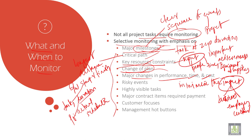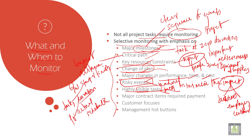Risk events also play a main role based on natural disasters — all these should be taken into consideration. Then highly visible tasks: these are the tasks that form a visible path towards accomplishing company objectives.